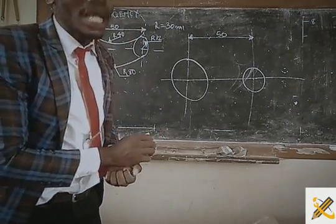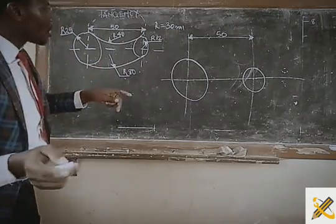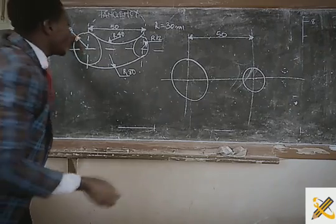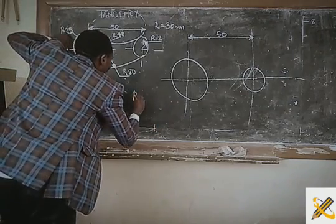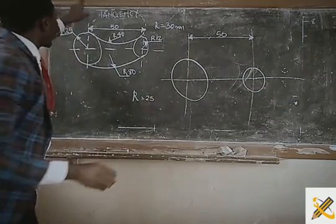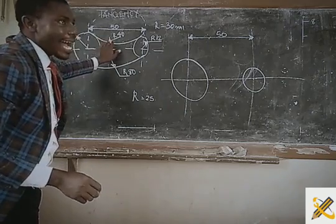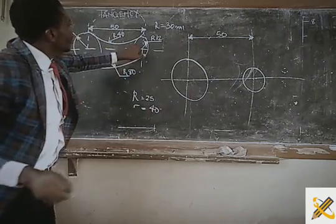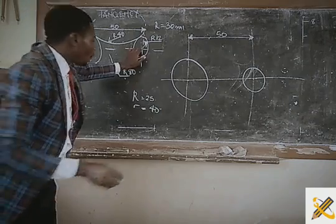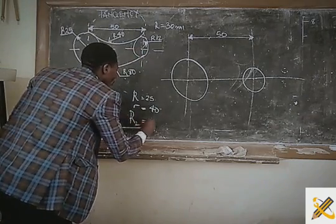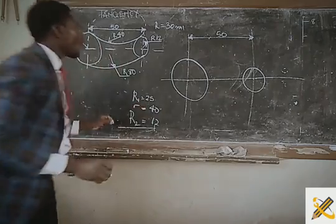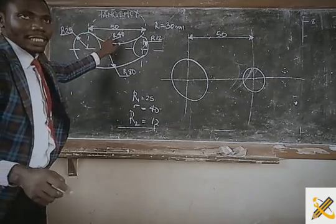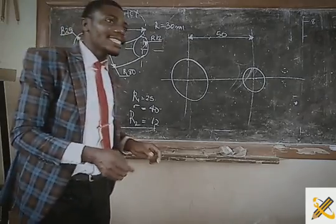For an external arc, we introduce the principle of addition. The first circle has radius R = 25. The arc here has radius r = 40. The third has radius R = 12. So to get the external arc center, we apply addition.